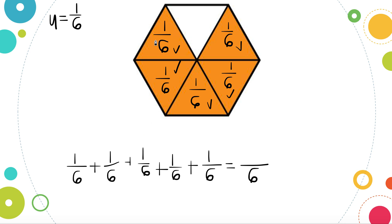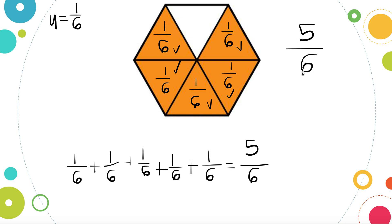We can count how many pieces are shaded in: one-sixth, two-sixths, three-sixths, four-sixths, five-sixths. So our fraction for this area model is five-sixths are shaded in.